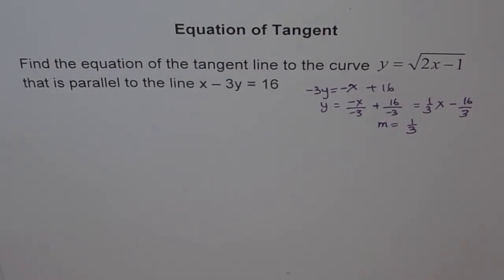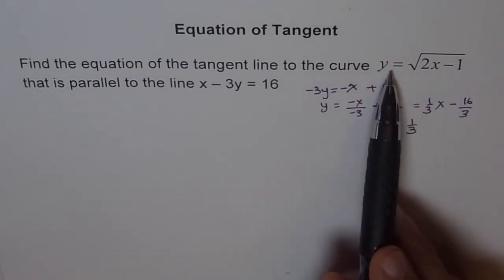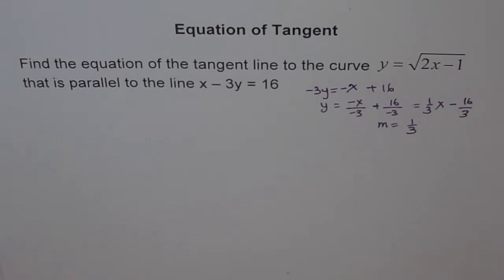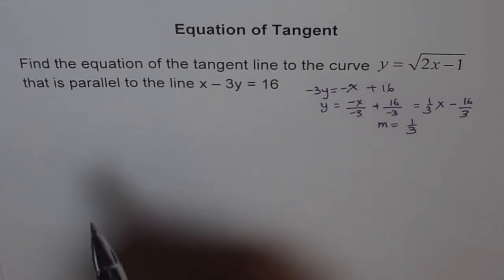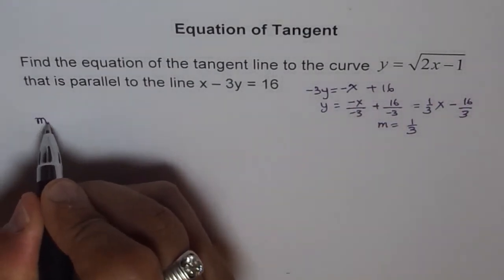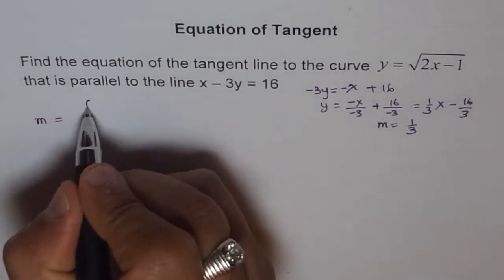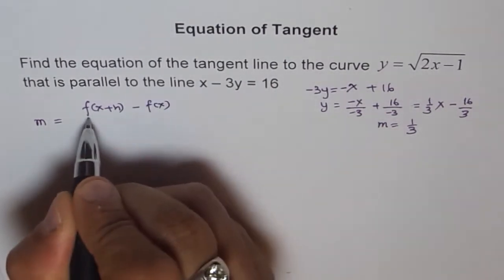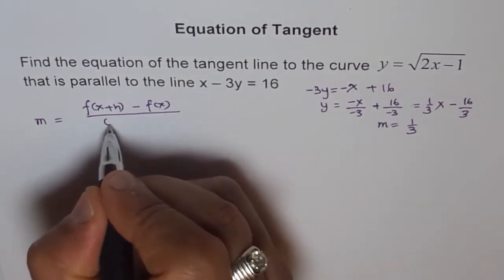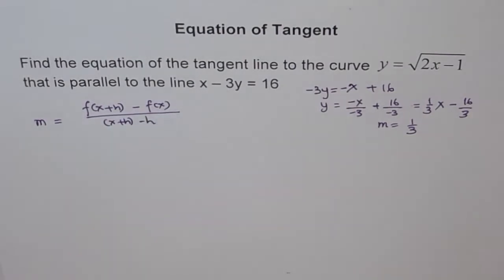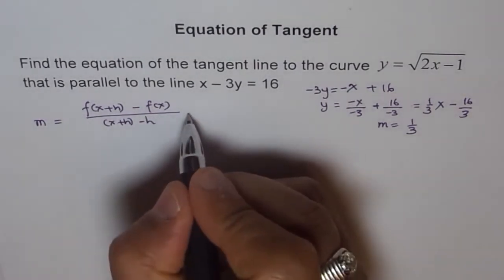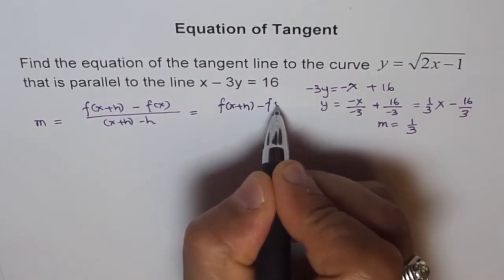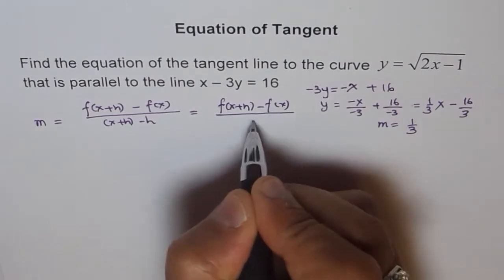Now let's find the slope of this curve in general using the first principle. The slope equals the limit of the difference quotient: f(x plus h) minus f(x), all over h, as h approaches 0.